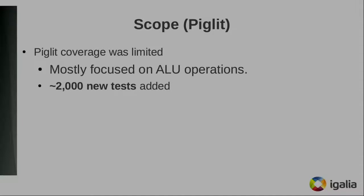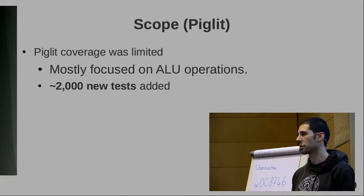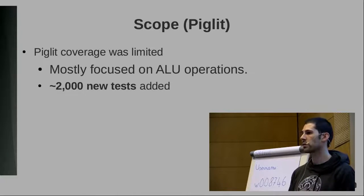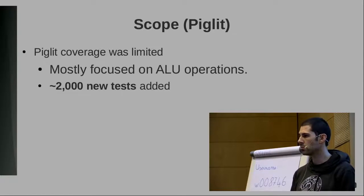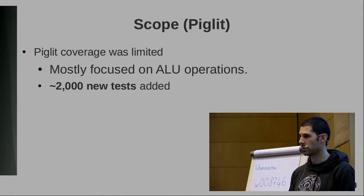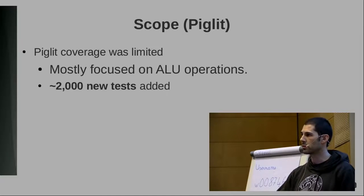It's not just about the scope in Mesa — it's also about things around Mesa like Piglit. When we started, there was already some FP64 coverage in Piglit, mostly focused on ALU tests. We added almost 2,000 new tests to increase coverage, which was very important to catch code paths in the driver that didn't do the right things for FP64 that we wouldn't have known about otherwise.